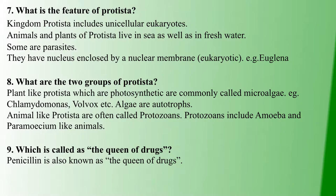Protista has two groups: eukaryotes. The first group is micro-algae, which are photosynthetic. Examples include Chlamydomonas. All algae are autotrophs — that is, they can synthesize their own food. The second group is protozoans.